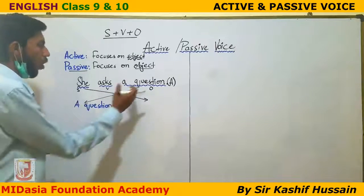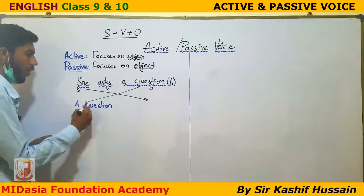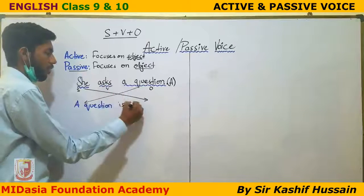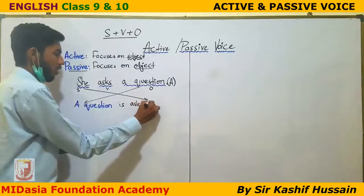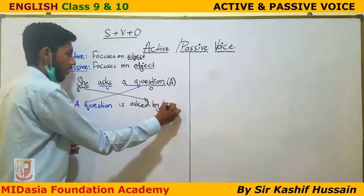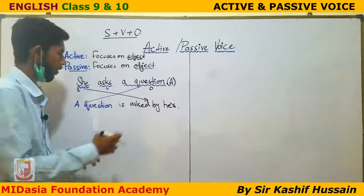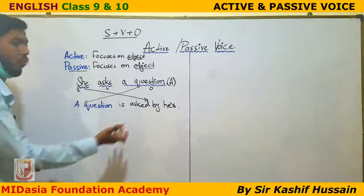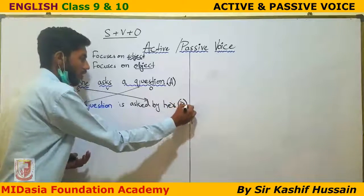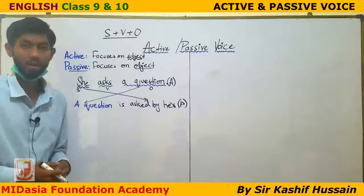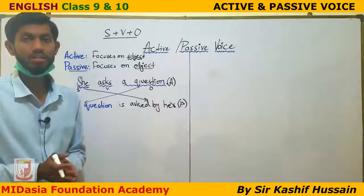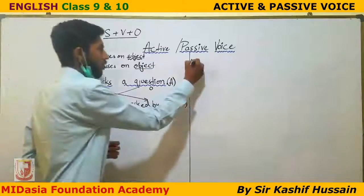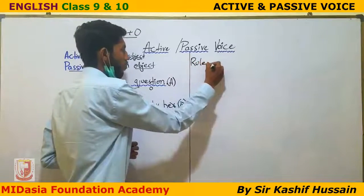When we convert active to passive voice, the object comes first, then the helping verb 'is', then the verb in its third form — 'asked' — then 'by', and then the subject. So 'She asked a question' becomes 'A question is asked by her.' I know you may be a little confused by how I changed the sentence, but there is logic — there are certain rules that I'm following, and I'm writing those rules on the right-hand side.